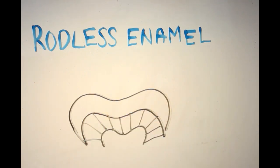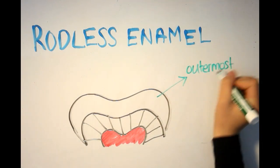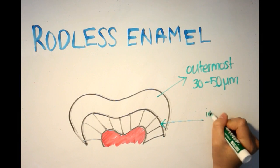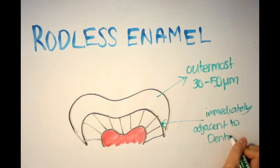However, we have rodless areas of enamel at the zone immediately adjacent to dentin and at the outermost 30 to 50 micrometers of enamel.